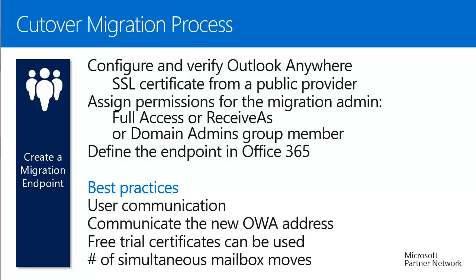Next, you need to create the migration endpoint on the Office 365 portal. This includes your server's name, the migration administrator account, and the number of simultaneous mailbox moves, which can limit performance stress on your on-premise Exchange server. As a best practice, communicate with users in advance of the migration — inform them of what will happen and give them the Outlook Web Access address. That way, if they have trouble connecting through Outlook, they can fall back to OWA, making issues less urgent.